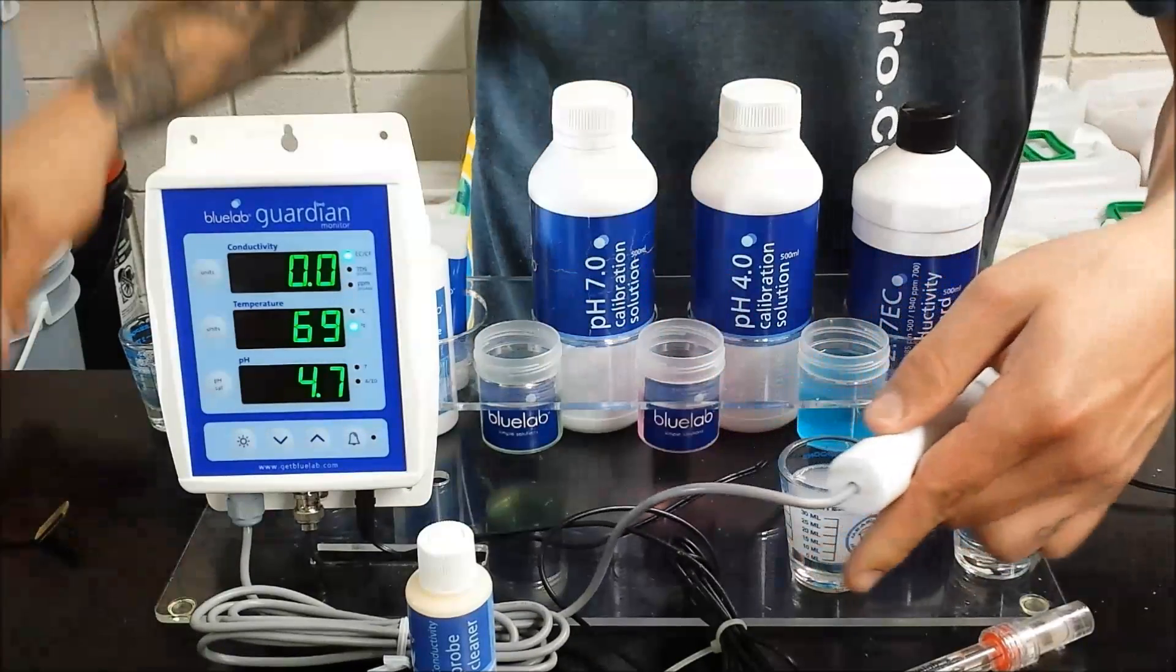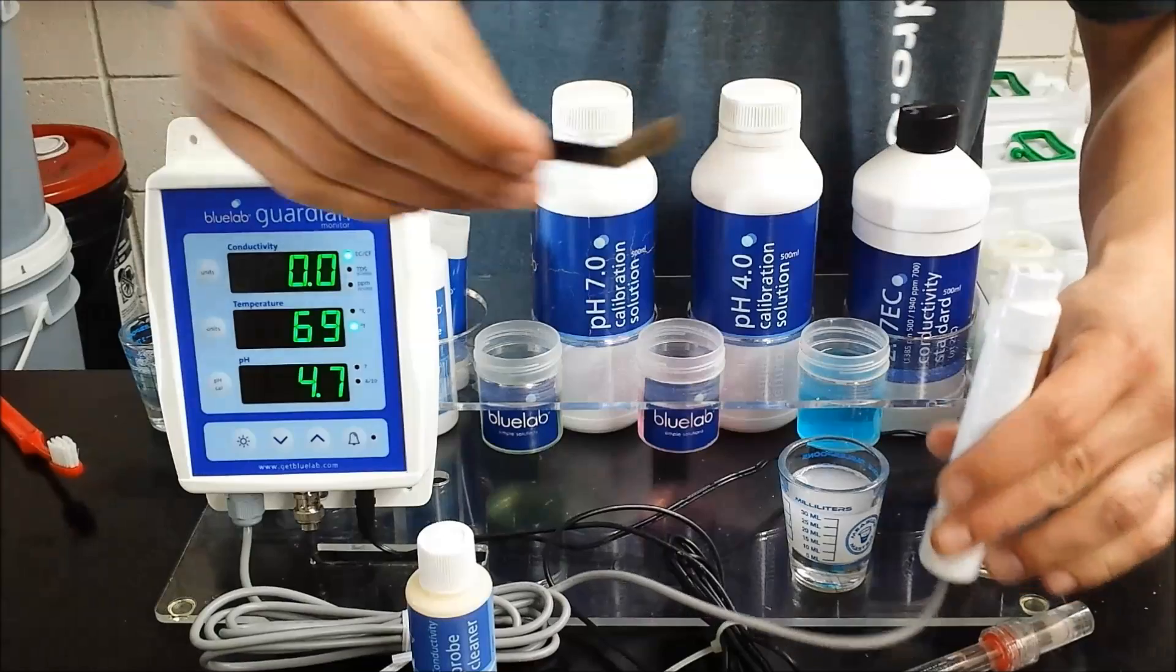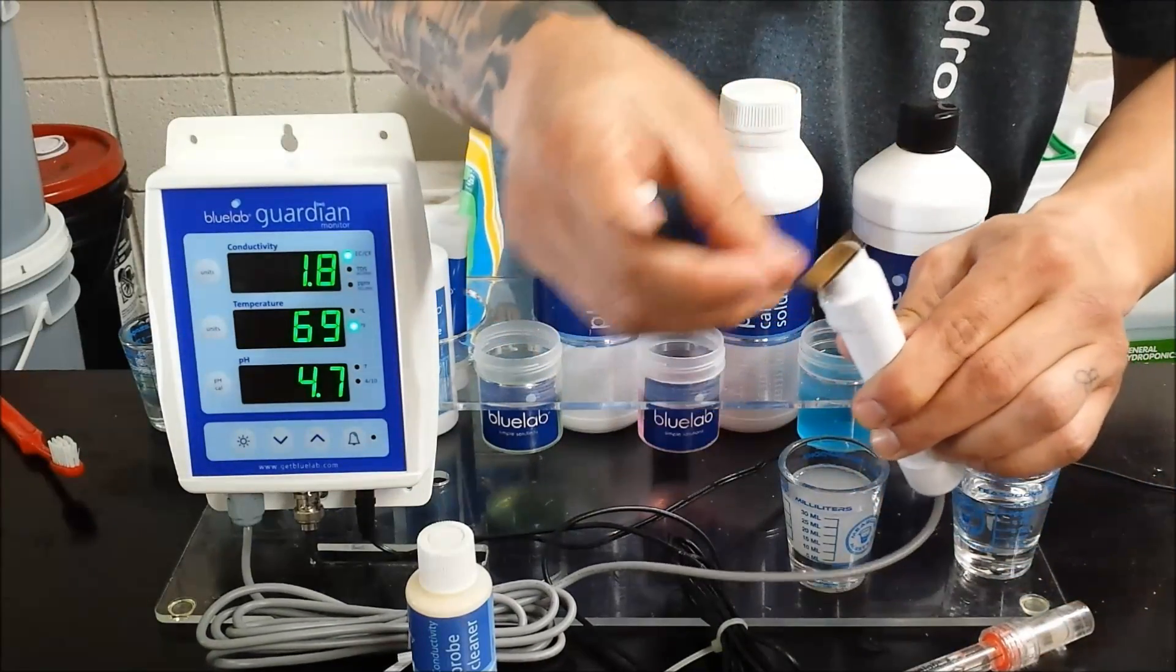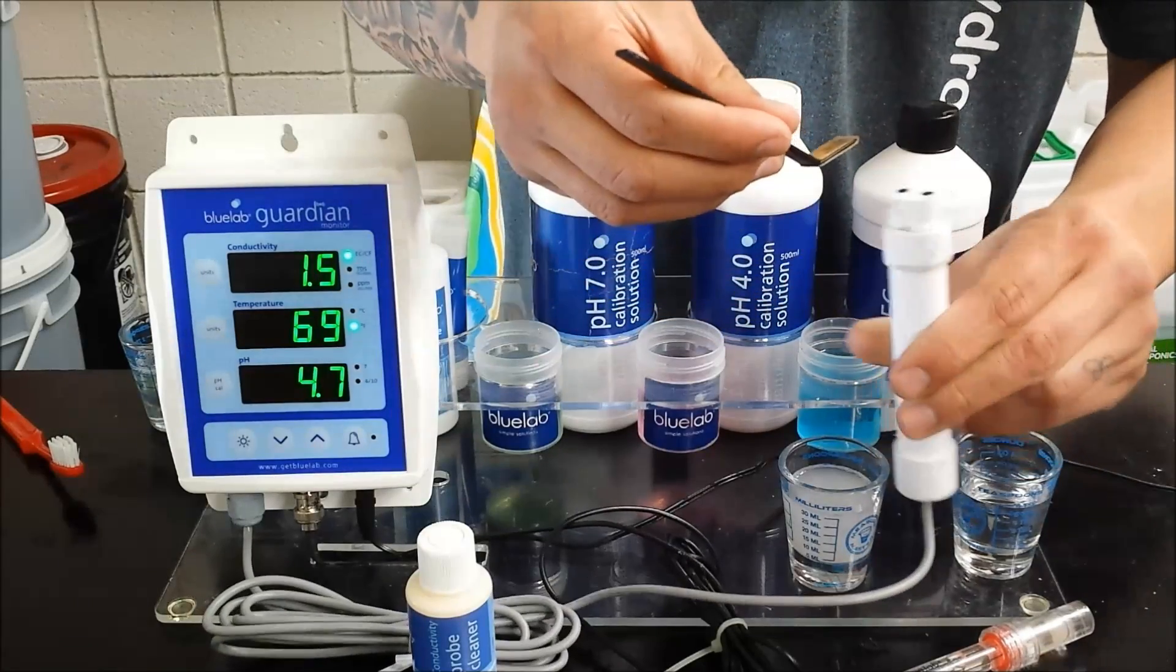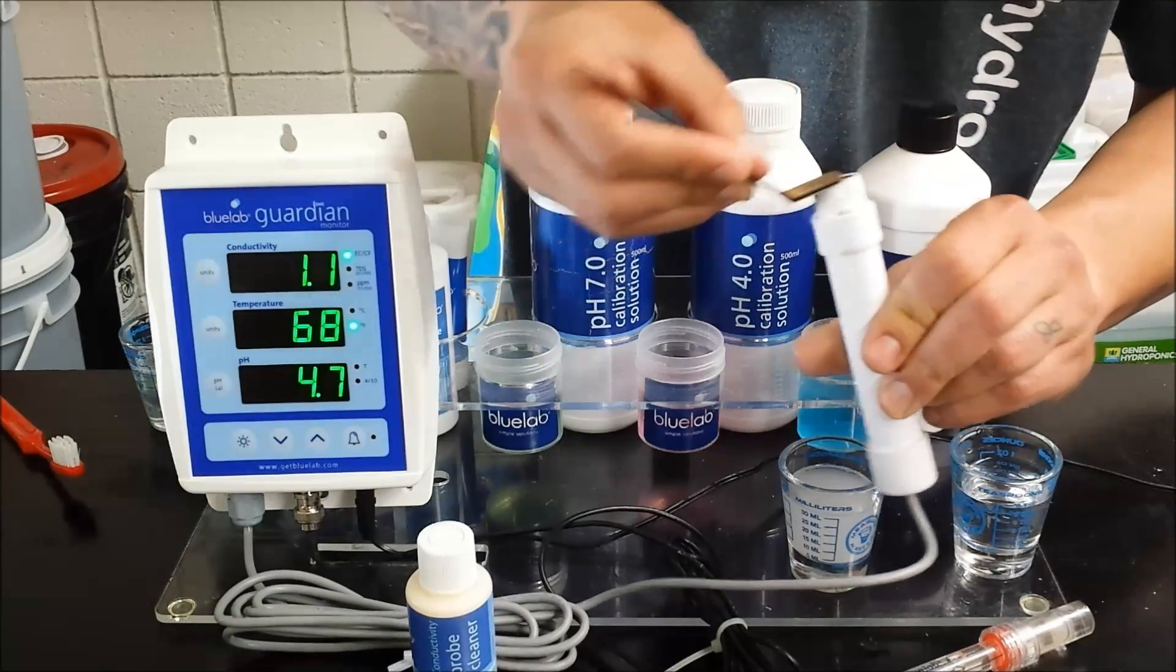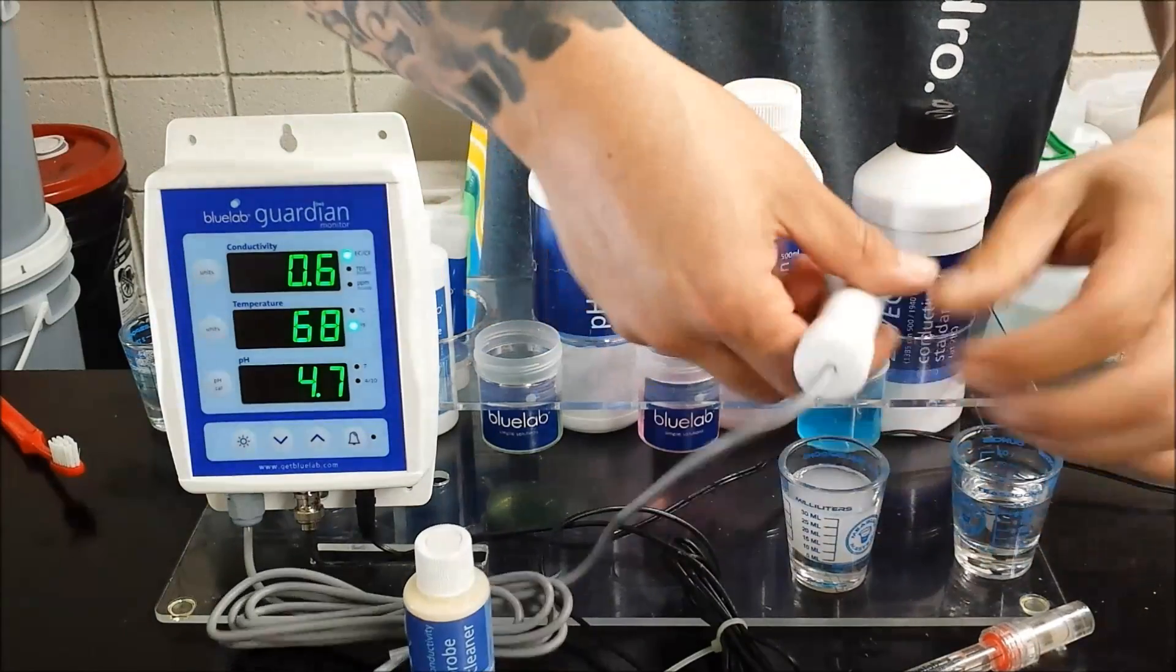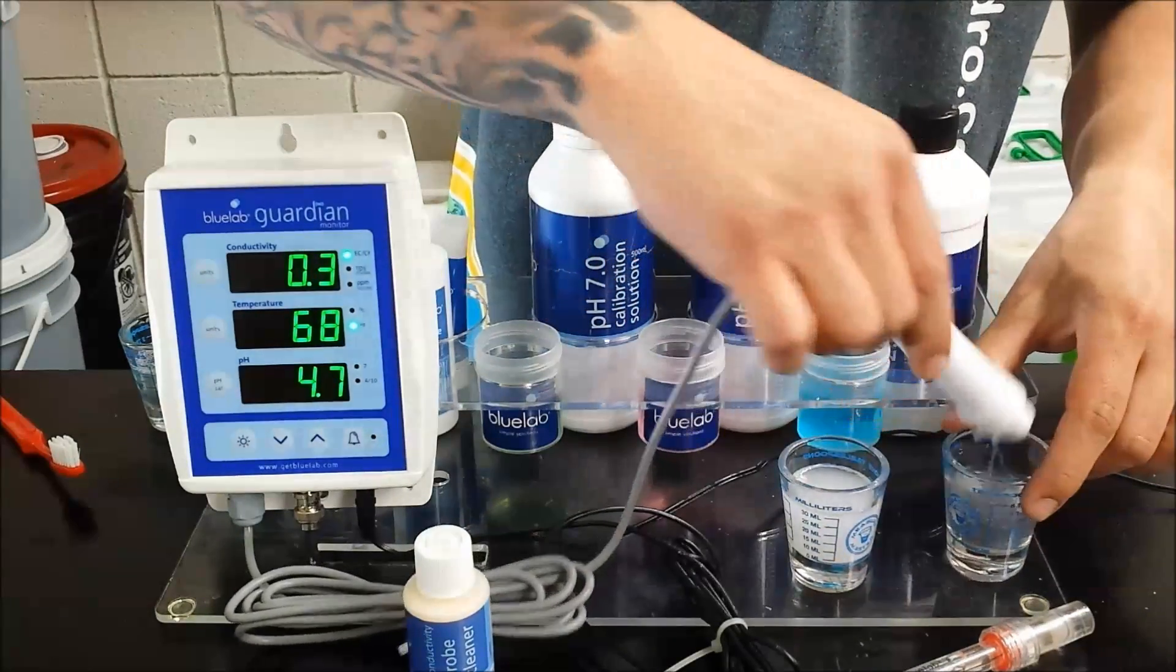Clean it off and then Bluelab's kit comes with a special scrubber that you can use for the points here and you want to scrub until you start seeing this gray film coming off so that you know it's fresh carbon and it's all nice and clean. Go ahead and give it a good rinse in water.